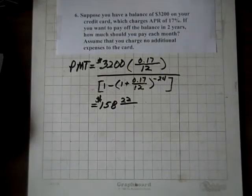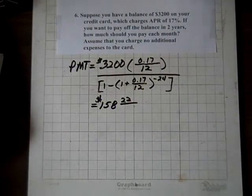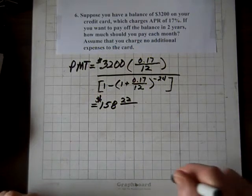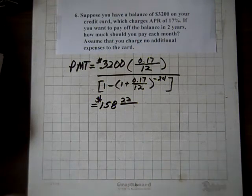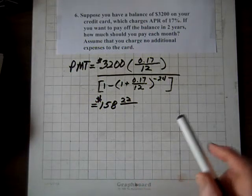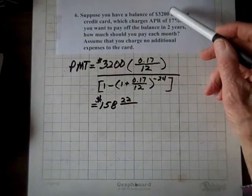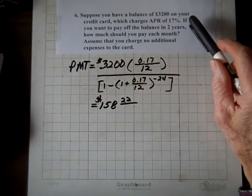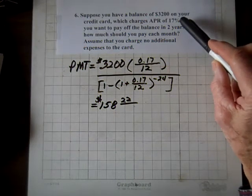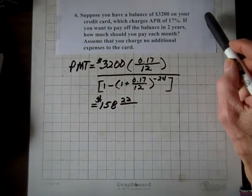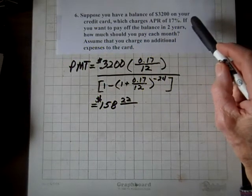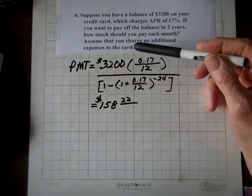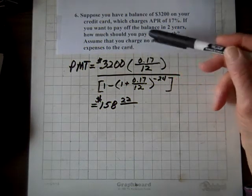So for question six on 4D, by the way, you'll see some of these questions, a couple of these questions on the test. So it's very important you understand these and they work for you. So anyhow, the balance is $3,200 on your credit card and the APR for that card is 17%. And you want to pay it off in two years and you're going to make monthly payments. So the principal is $3,200,